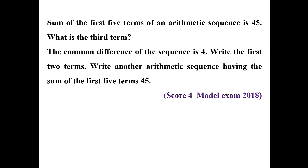The sum of the first 5 terms of an arithmetic sequence is 45. What is the third term? The common difference is 4. Write the first 2 terms. Write another arithmetic sequence having the sum of the first 5 terms equal to 45. This is a question from model examination 2018 with a score of 4.